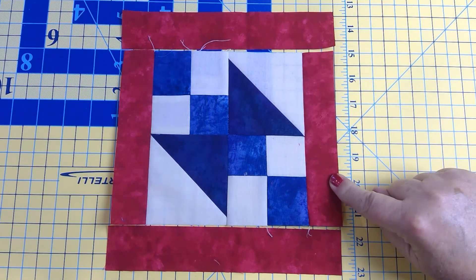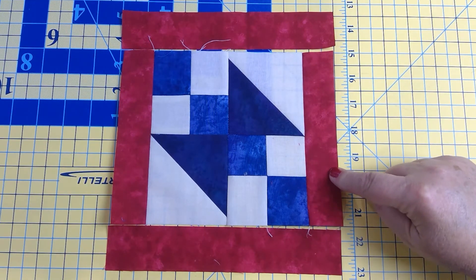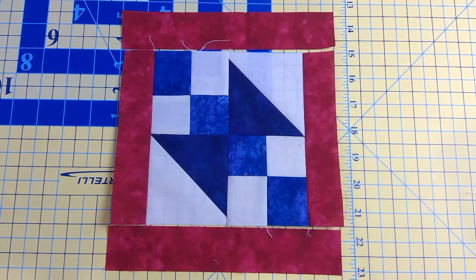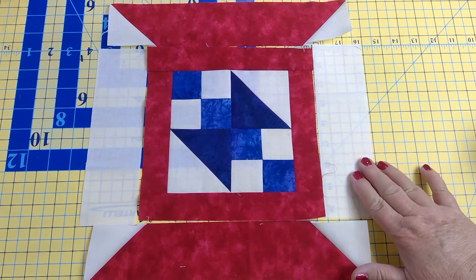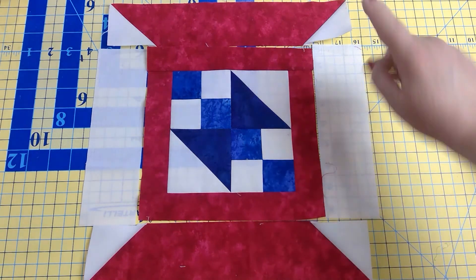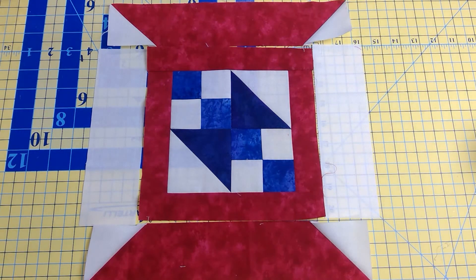I have my left and right side frame pieces joined. Now I will do my top and bottom frame pieces. Now it's time to add the left and right side of your lighter color frames and the top and bottom of your spool to finish off your spool block.